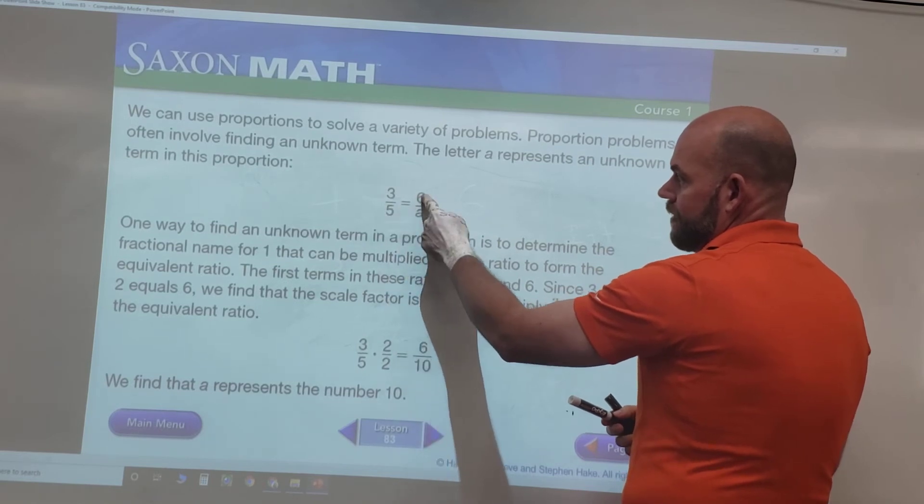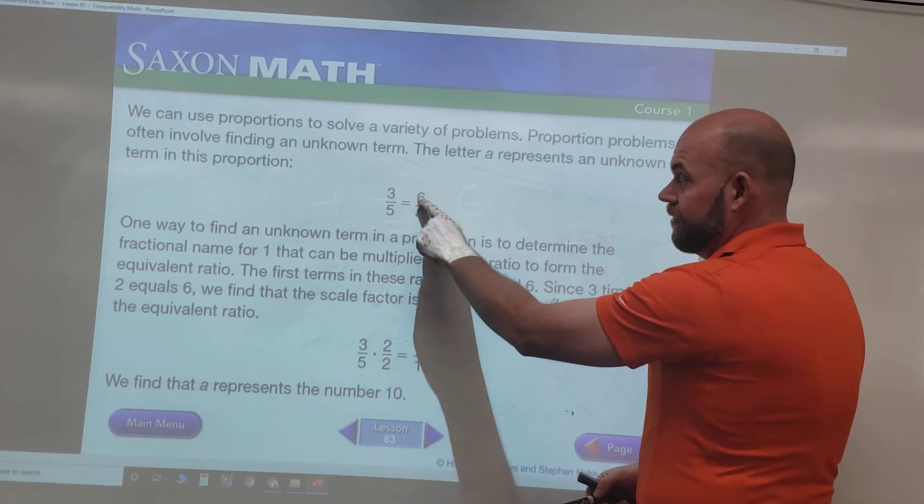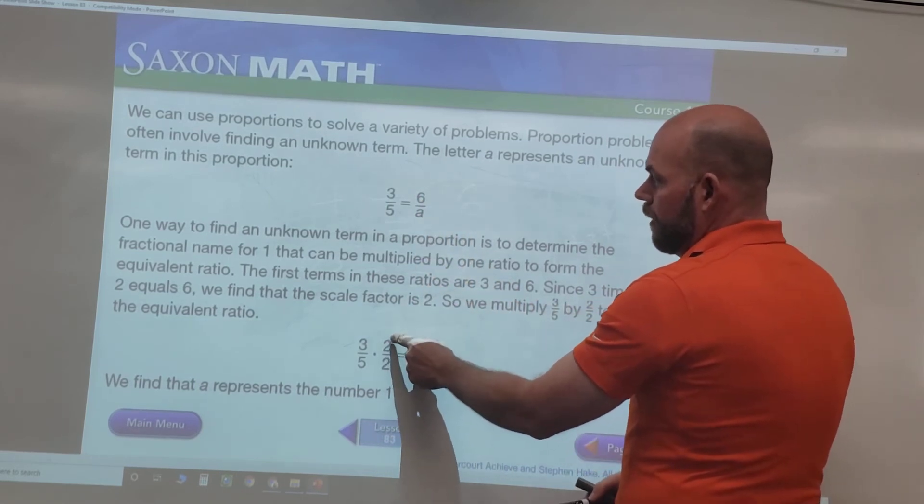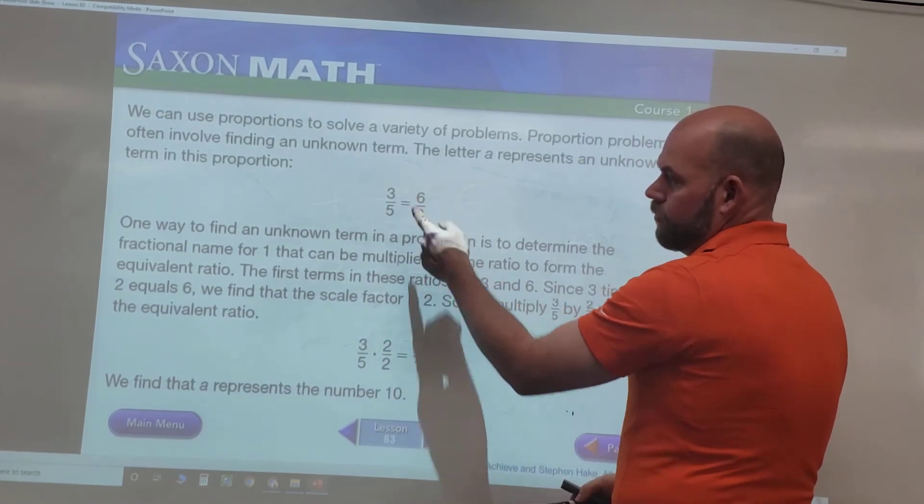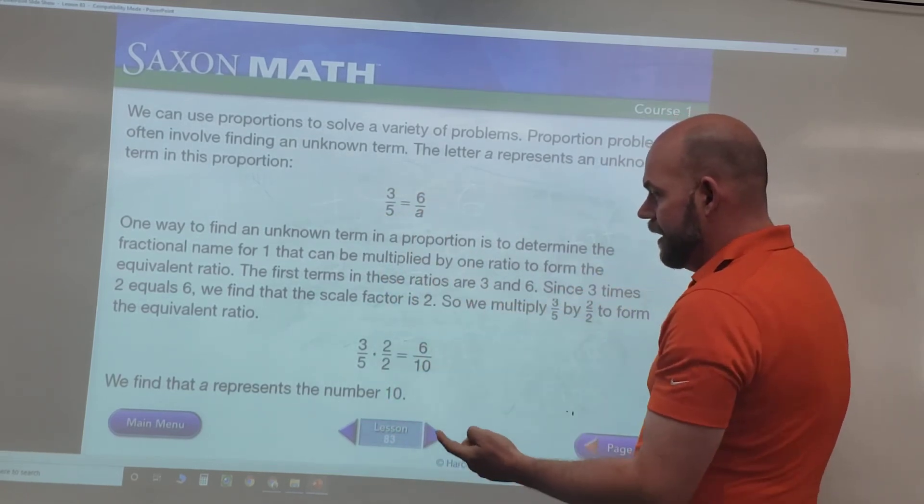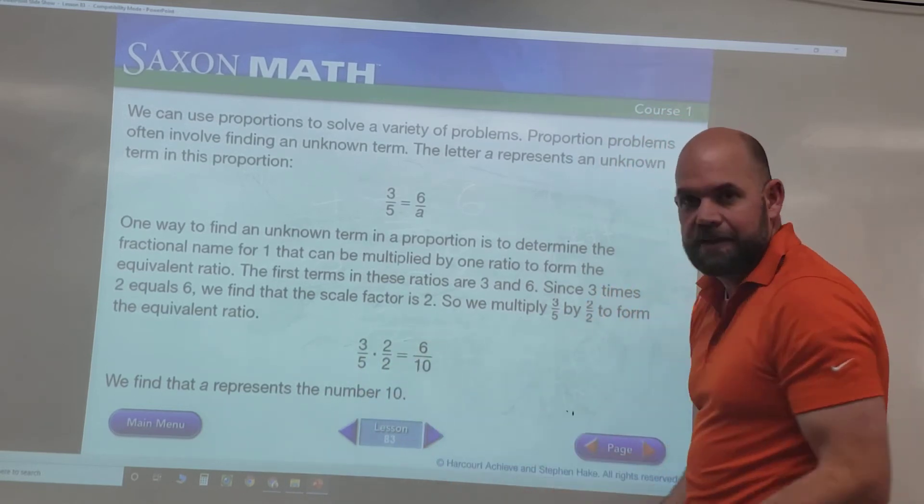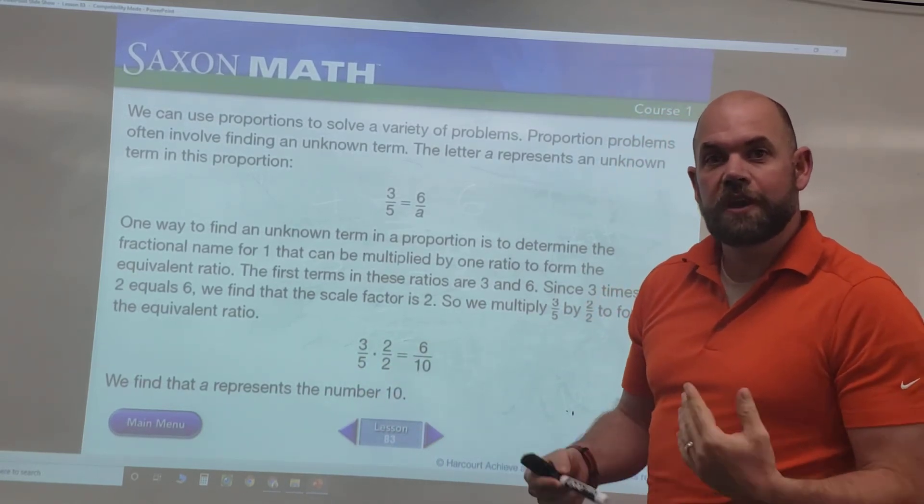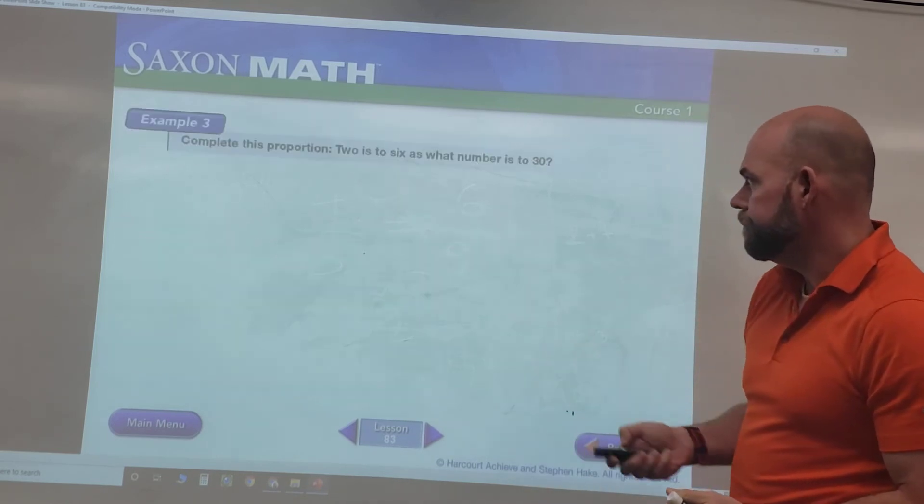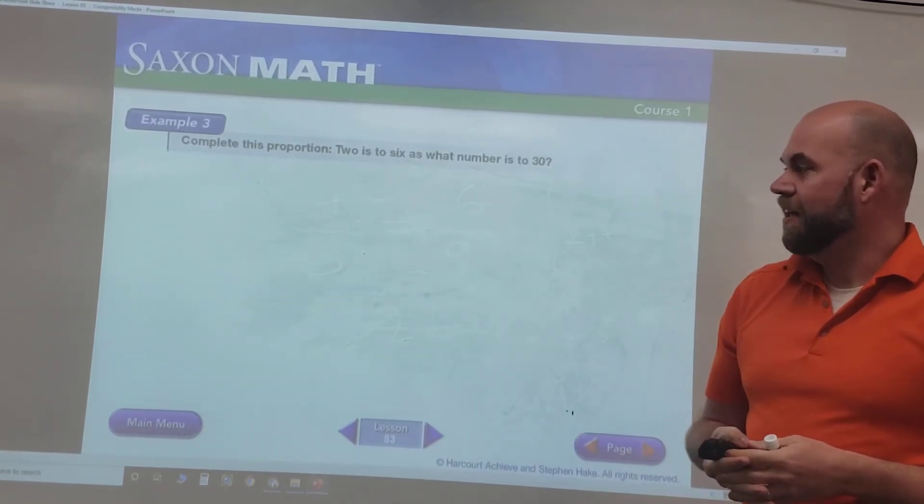One way to find an unknown term in a proportion is to determine the fractional name for one that can be multiplied by one of its ratios. In this case, three is to five as six is to what. Well, we know three times two equals six, so if we multiply it by two over two, three times two is six, five times two is ten. So three is to five as six is to ten - that's the same ratio or the same proportion.